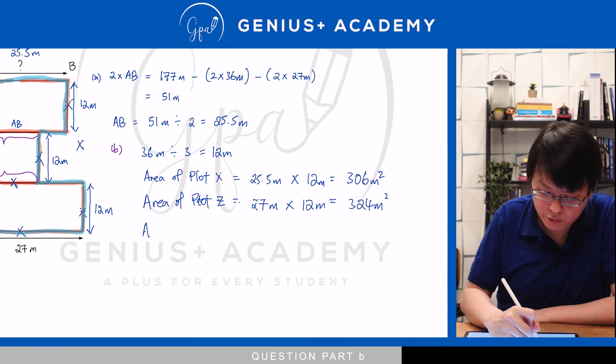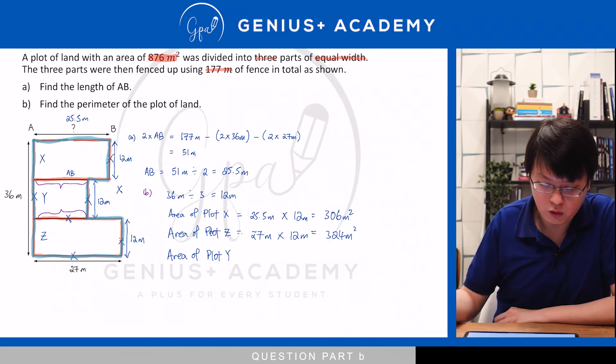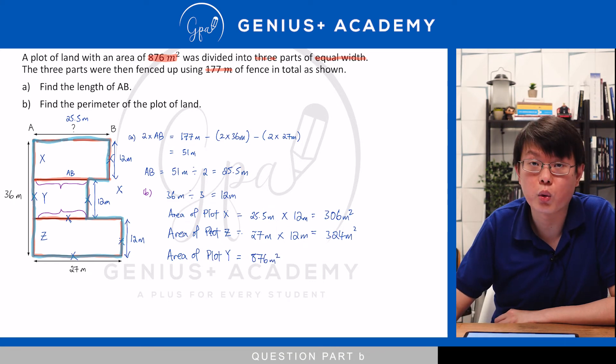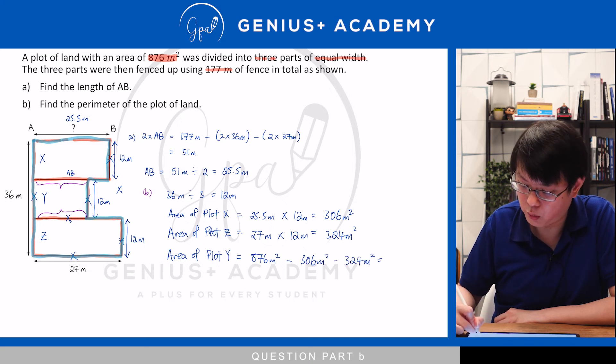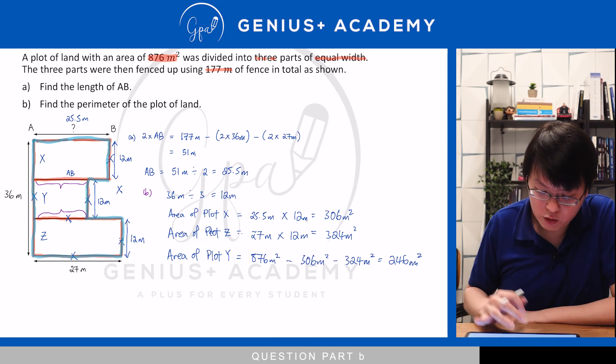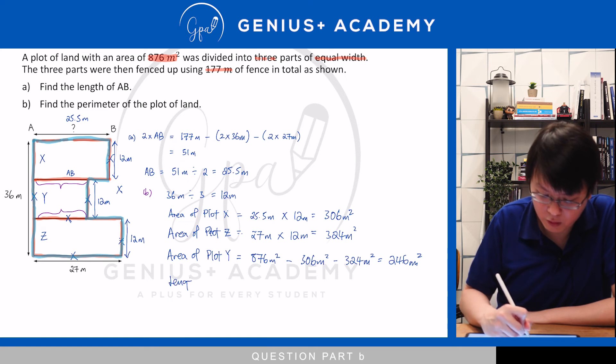This allows us to find the area of plot y. Plot y will be equal to 876 metres squared, which is the total given to us in the question. We subtract away x and we subtract away z. That gives us an area of 246 metres squared. Once we have the area of y, we can use the area divided by the breadth to find the length of y. And that's what we are going to do next.